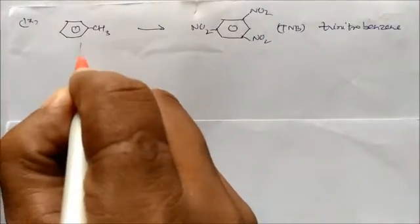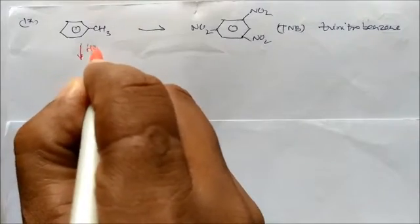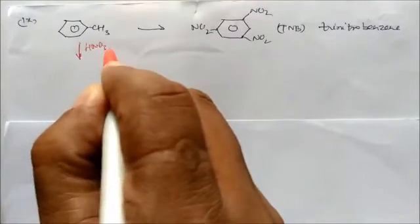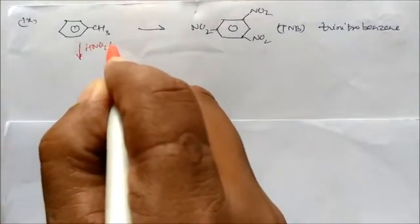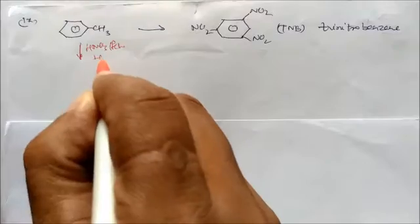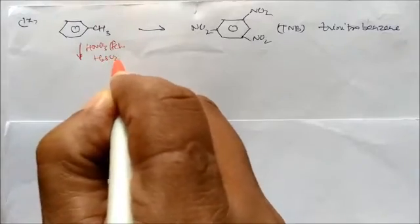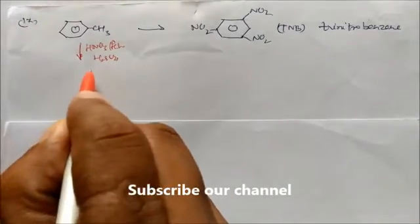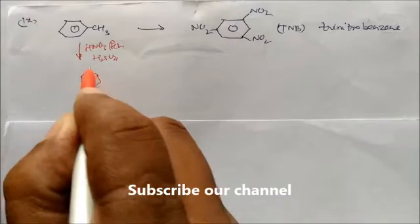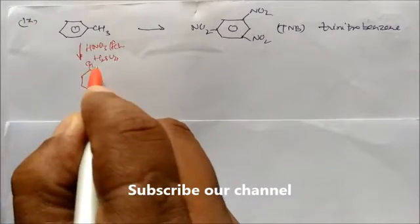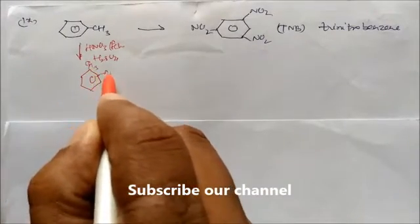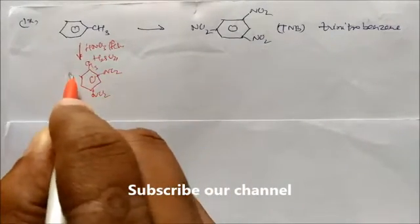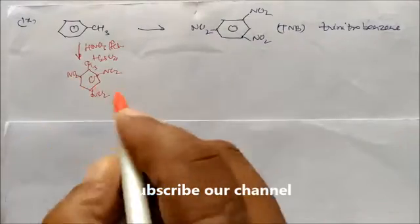If you give concentrated nitric acid — fuming nitric acid — in presence of H2SO4, this will convert toluene into a product with NO2 groups at three places: ortho, para, and meta positions.